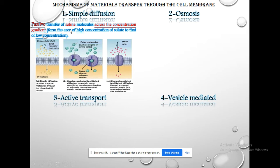Passive transfer of what? Of solute — the transfer of solute molecules across the concentration gradient. The transfer always occurs from the area of high concentration to the area of low concentration. The diffusion process occurs passively and involves the solute transferring along the concentration gradient. The process of diffusion is subdivided into simple diffusion, carrier-mediated diffusion, and channel-mediated diffusion.